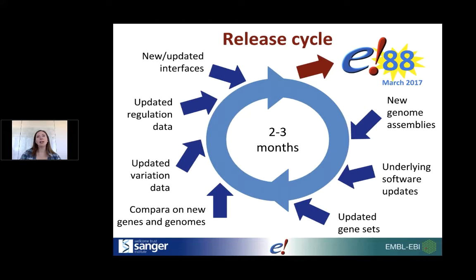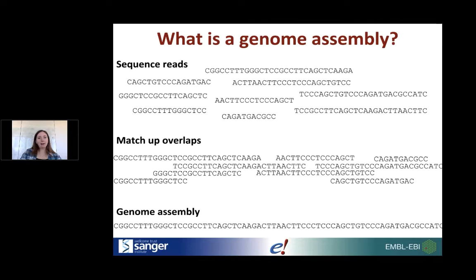Just a little background on what a genome assembly is. We don't do any assembly or sequencing ourselves. We don't yet have technology to sequence entire chromosomes in one go, so the genome is fragmented, those fragments are sequenced, overlaps are matched up, and then a genome assembly is rebuilt. This process can lead to errors — incomplete coverage, gaps, or inverted regions. All the genomes we import are still a work in progress, so everything we build on top is a prediction based on the quality of the assembly.